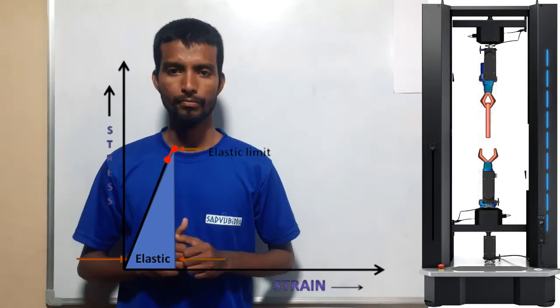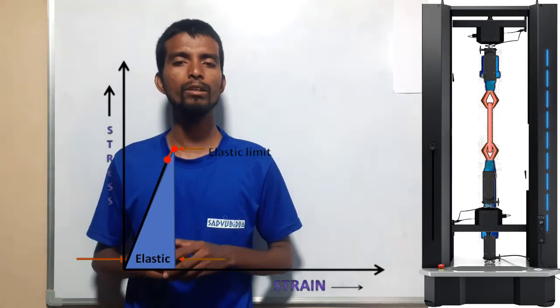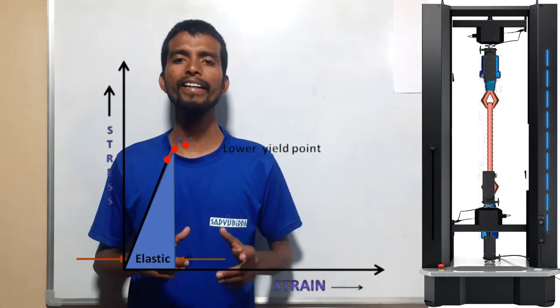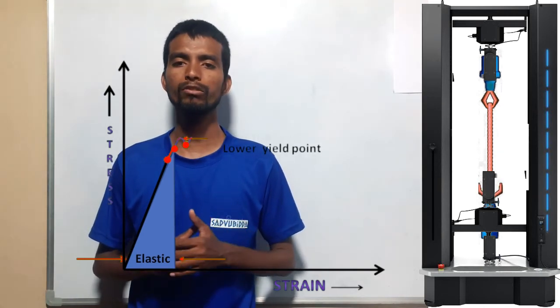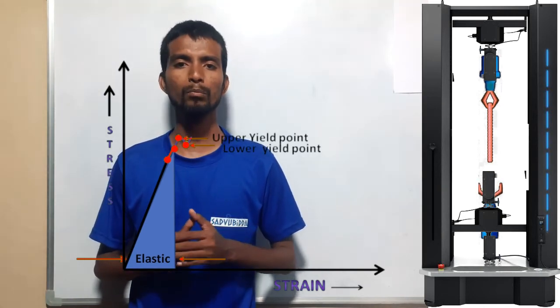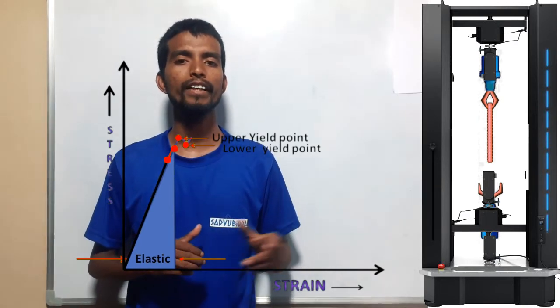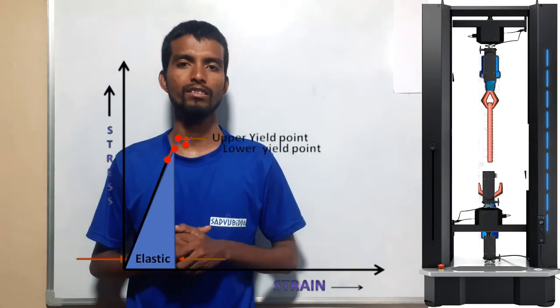If we further increase the load, the member will be yielding. It means that the member is going into permanent deformation. After this point, if we remove the load, the member will not regain its original shape and size.